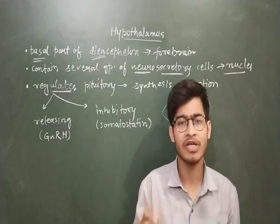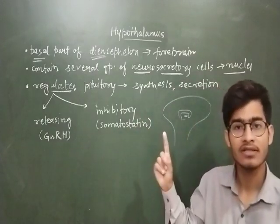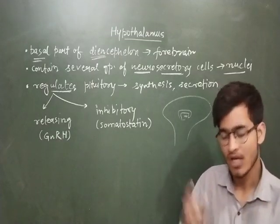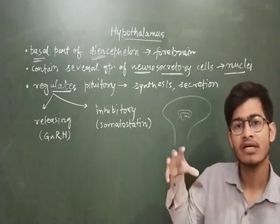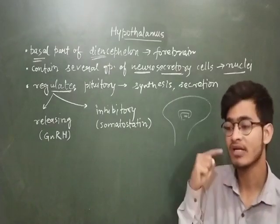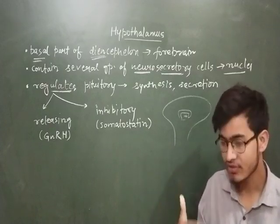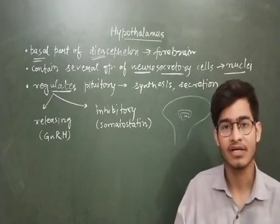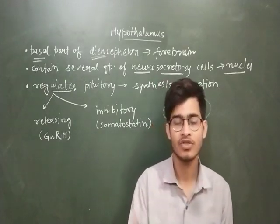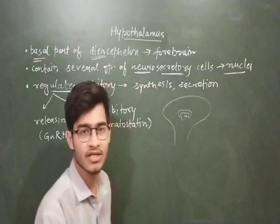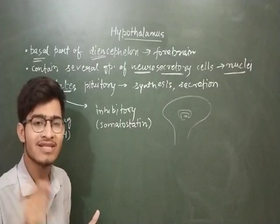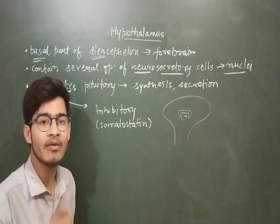Synthesis simply means that a hormone is being made at a particular location — that is the synthesis. But if you are sending that particular thing to a destined part, that is secretion. So synthesis is basically forming a hormone, and secretion is sending it to do its function. The synthesis as well as secretion of many pituitary hormones is under the direct control of hypothalamus.